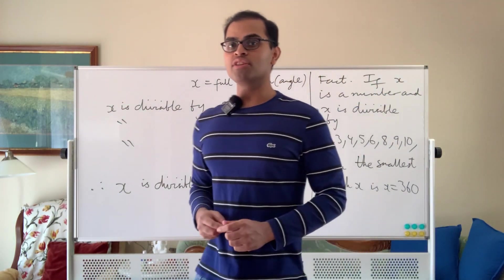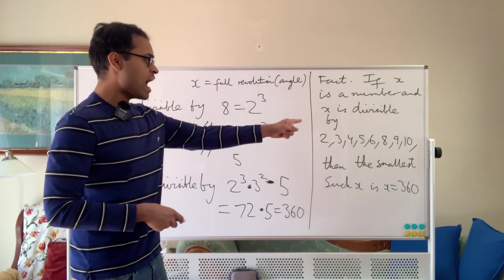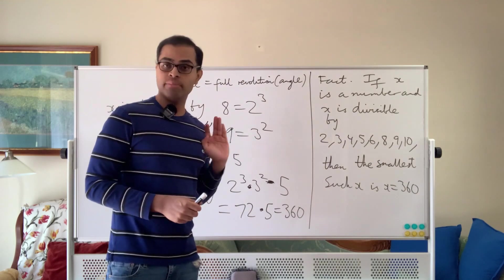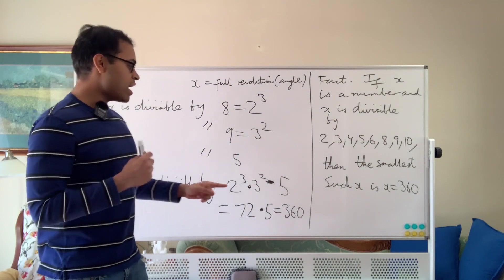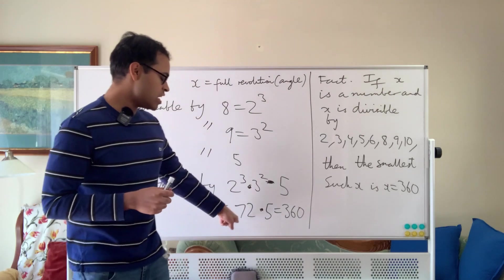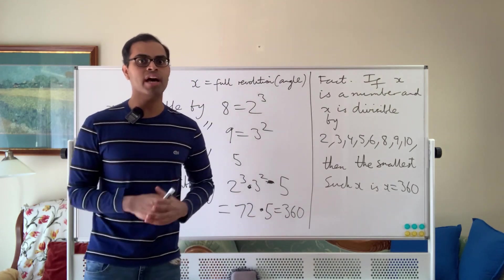And now the last question you may be wondering is, why didn't we add on 7 there? Well, the reason for that is, if we have to make this number divisible by 7, then the number would have to be at least 7 times 360. The only way to create a factor of 7 is literally to multiply it to 360.